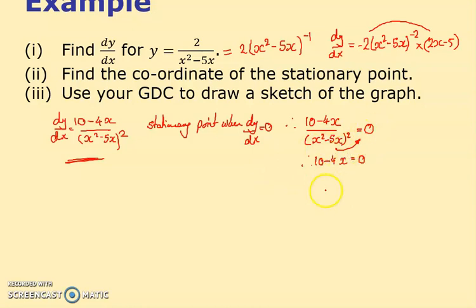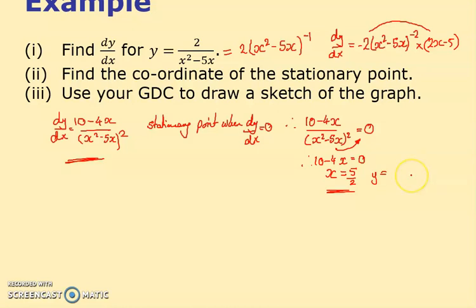So 10 - 4x = 0, giving 4x = 10, so x = 5/2 or 2.5. It says coordinate, not just x, so I need a y value. I substitute x = 5/2 into the original function — I'll use my calculator: 2 divided by (2.5² - 5×2.5), which gives minus 8/25. So the stationary point is (2.5, -8/25).